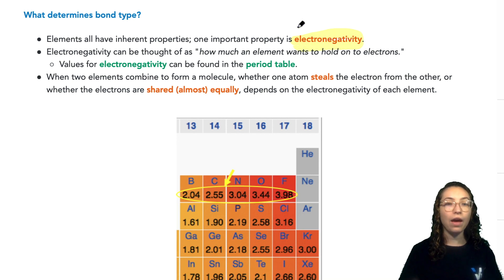Electronegativity can be thought of as how much an element likes to hold on to its electrons, either the electrons that it already has around its nucleus or electrons from other elements that it might interact with to form bonds. So the values for electronegativity can be found in the periodic table. As an example, here are a few important ones.